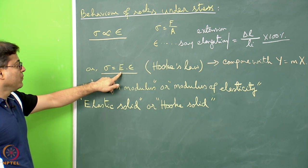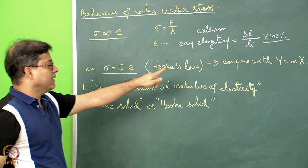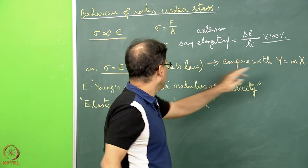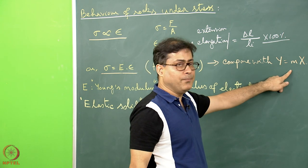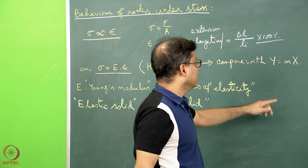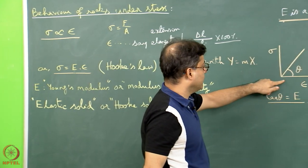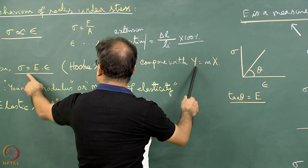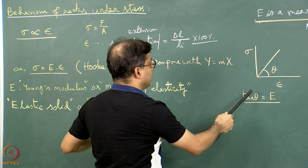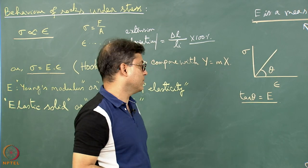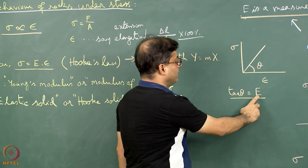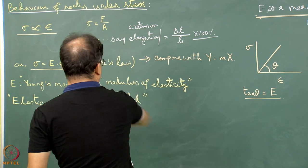The relationship stress equals Young's modulus multiplied by strain can be compared with y = mx. In that case sigma is comparable with y, E is comparable with m, and epsilon is comparable with x. If we plot it graphically with sigma along the y-axis and strain along the x-axis, a linear relationship can be found for certain rocks and solids. The tan of the angle theta can be called E, which is the proportionality constant, the Young's modulus.